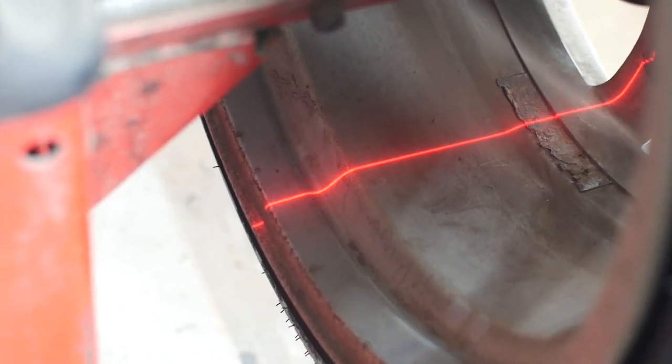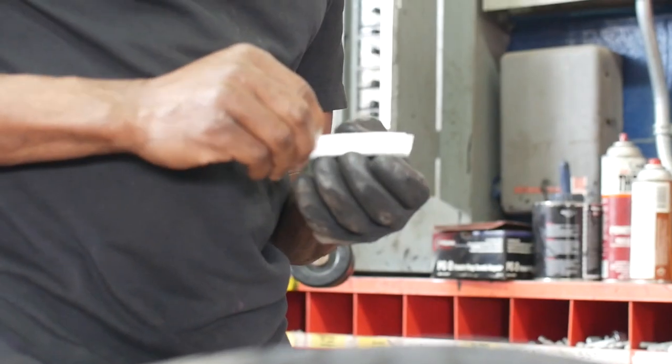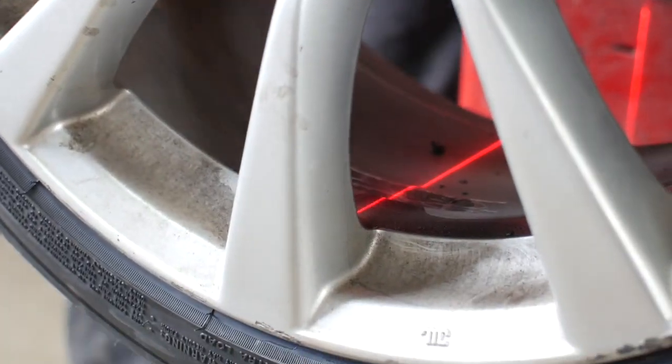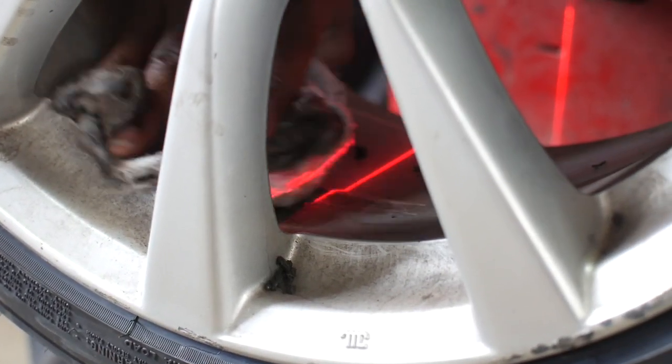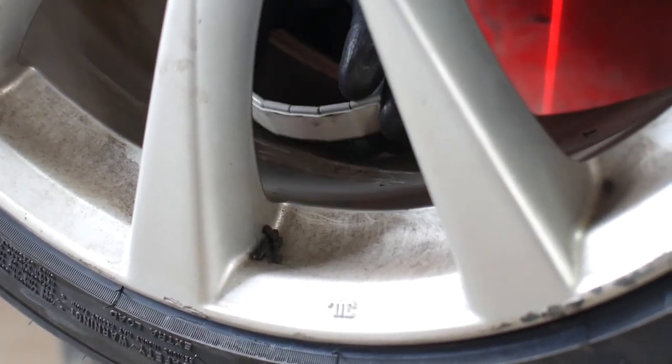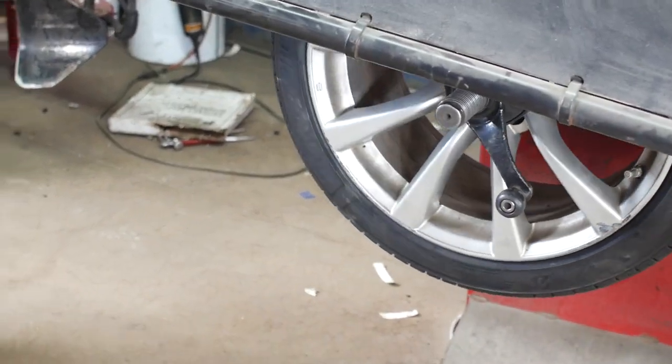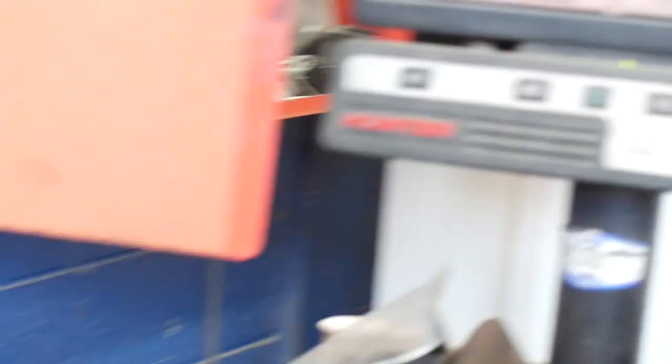The laser is showing Terry exactly where to put the weight. This means that the heavy spot is actually 180 degrees. So think about it. If the weight is going at 6 o'clock, that means the heavy spot is at 12 o'clock. He spins it again to double check and everything is okay.